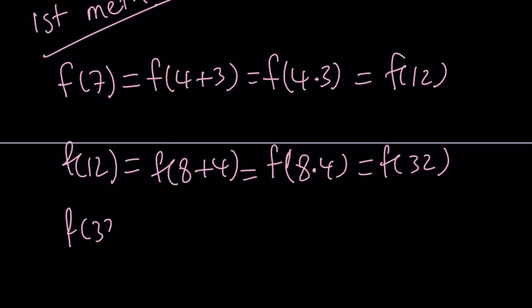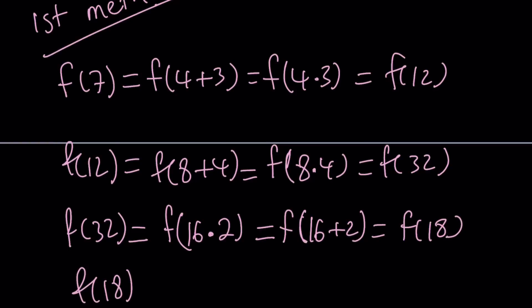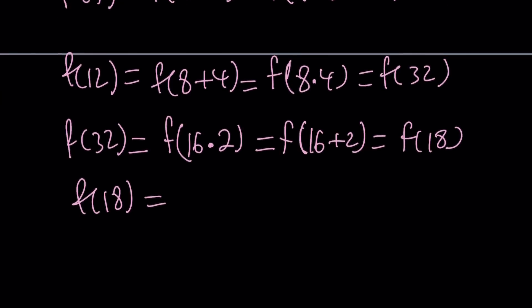Now, I'm going to start off with F of 32. F of 32 can be written as F of 16 times 2. And since I have F of 16 times 2, this time I'm going to go backwards. Start with the product. But I can write it as F of 16 plus 2. And that is equal to F of 18. Now, I'm going to start off with F of 18. Hopefully, you know where I'm going. So, I think F of 18 can be written as F of 9 times 2. And that is F of 9 plus F of 2.